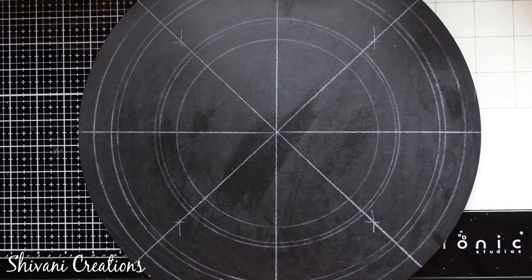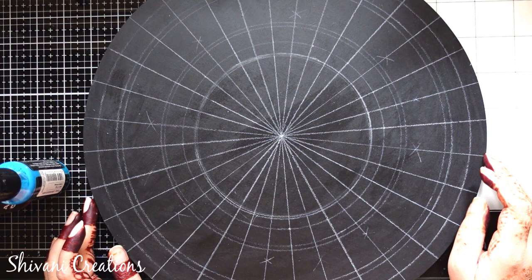So that we will know from where we have to start. Now I am dividing each of this part again in 4 parts. So in total I am going to divide my base into 32 equal parts. And after dividing it, it will look like this. Now all the markings are done.